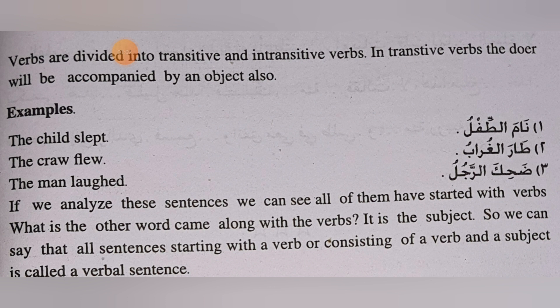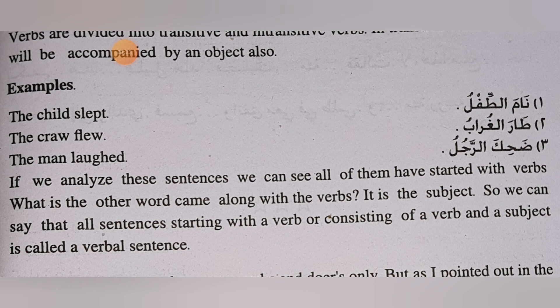The examples given are: Naama al-Tiflu — the child slept; Taara al-Gurabu — the crow flew; Dahika al-Rajulu — the man laughed. These are all verbal sentences because they start with a verb followed by a subject. So we can say all sentences starting with a verb and consisting of a verb and a subject are called verbal sentences.